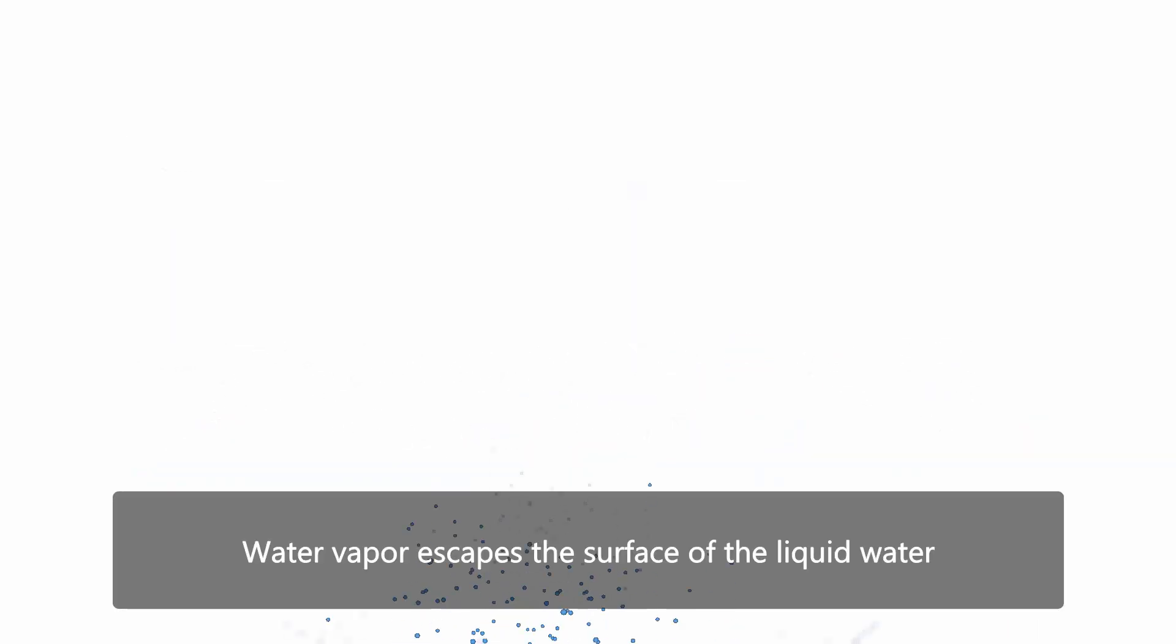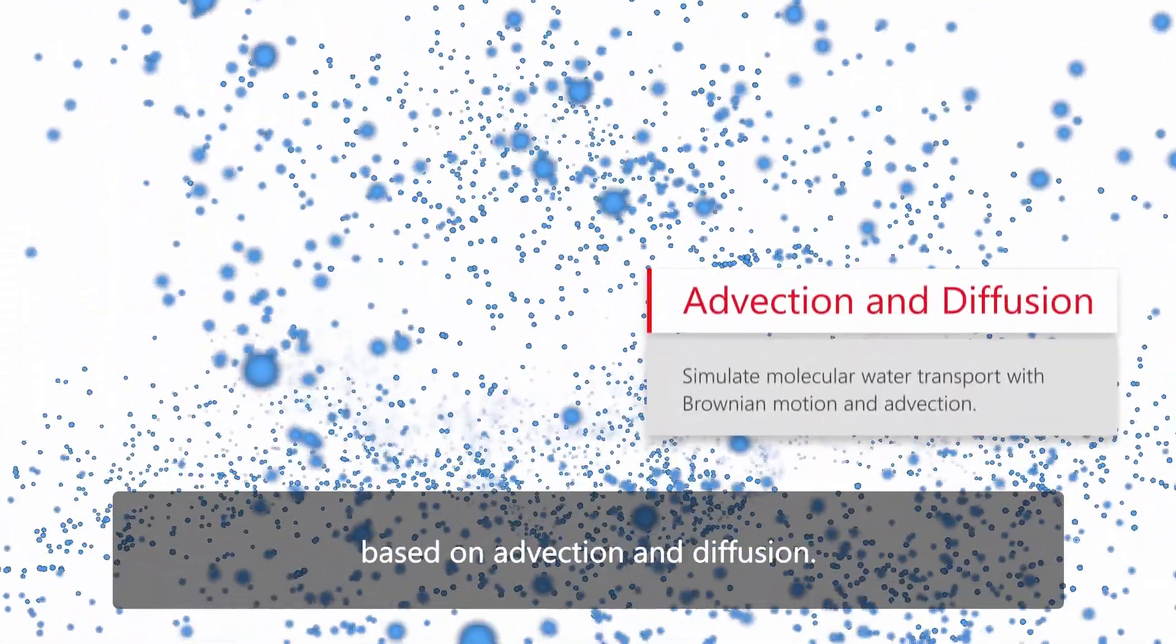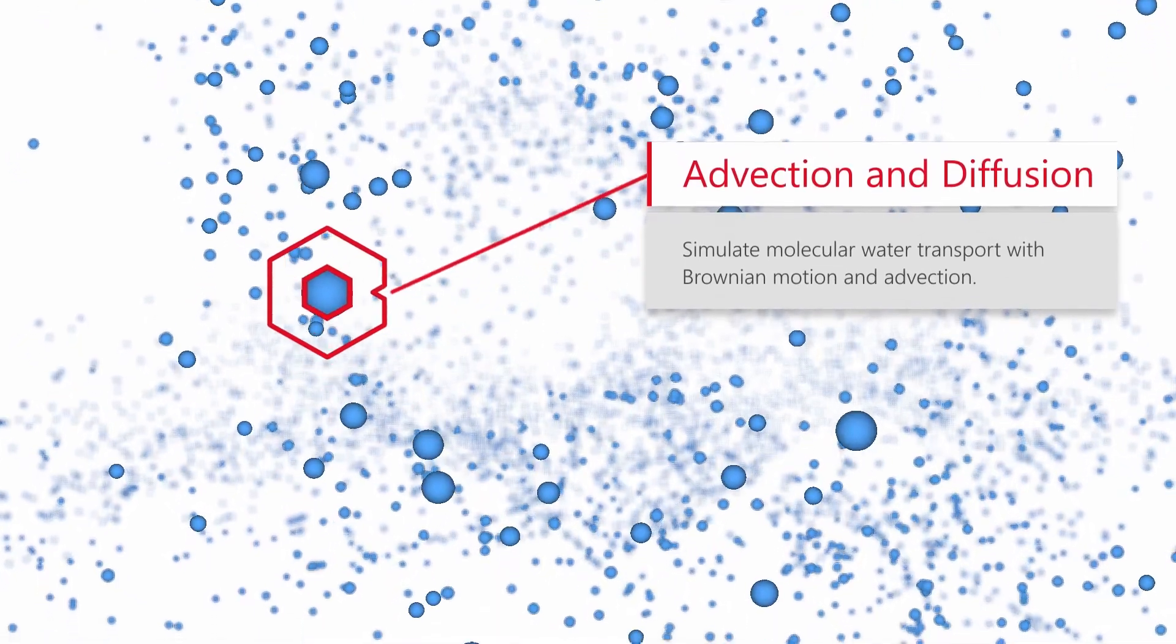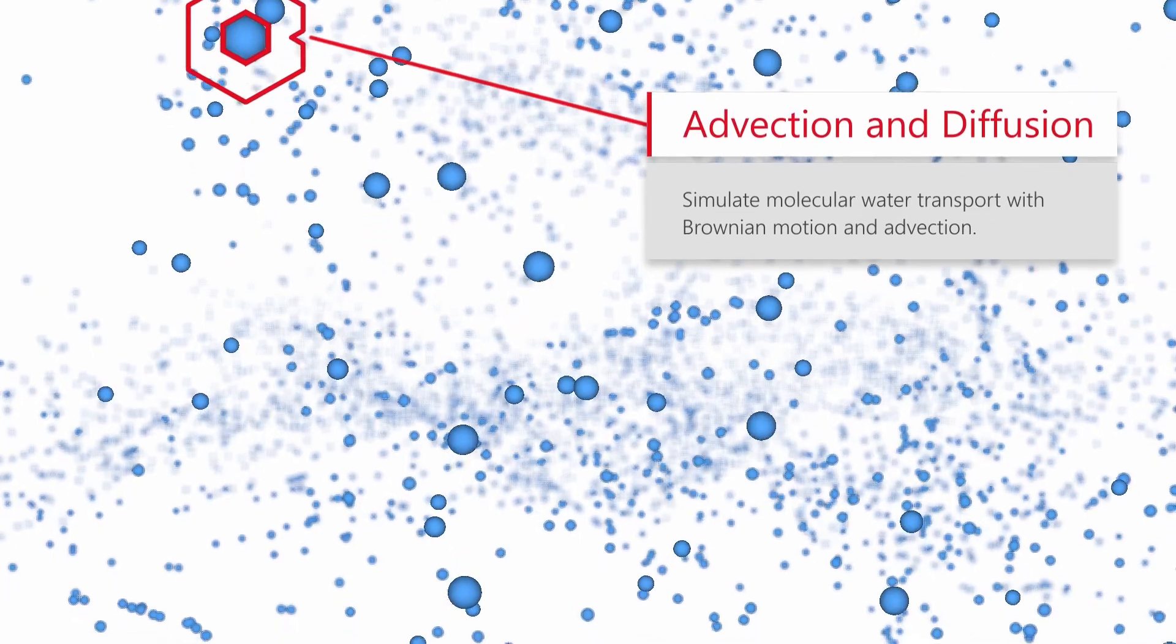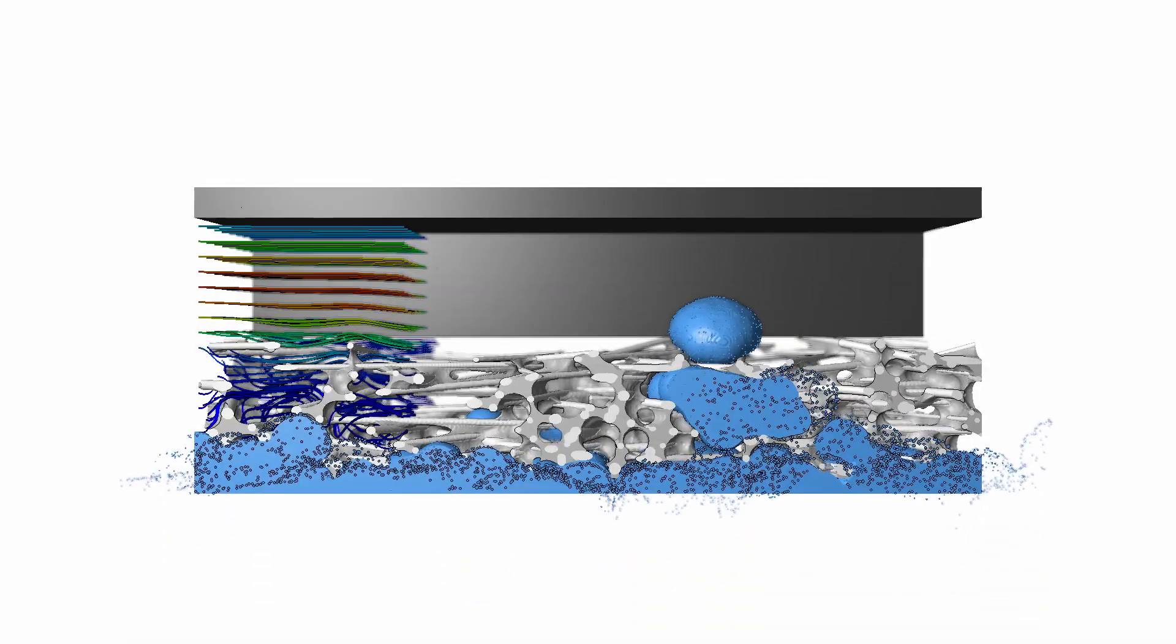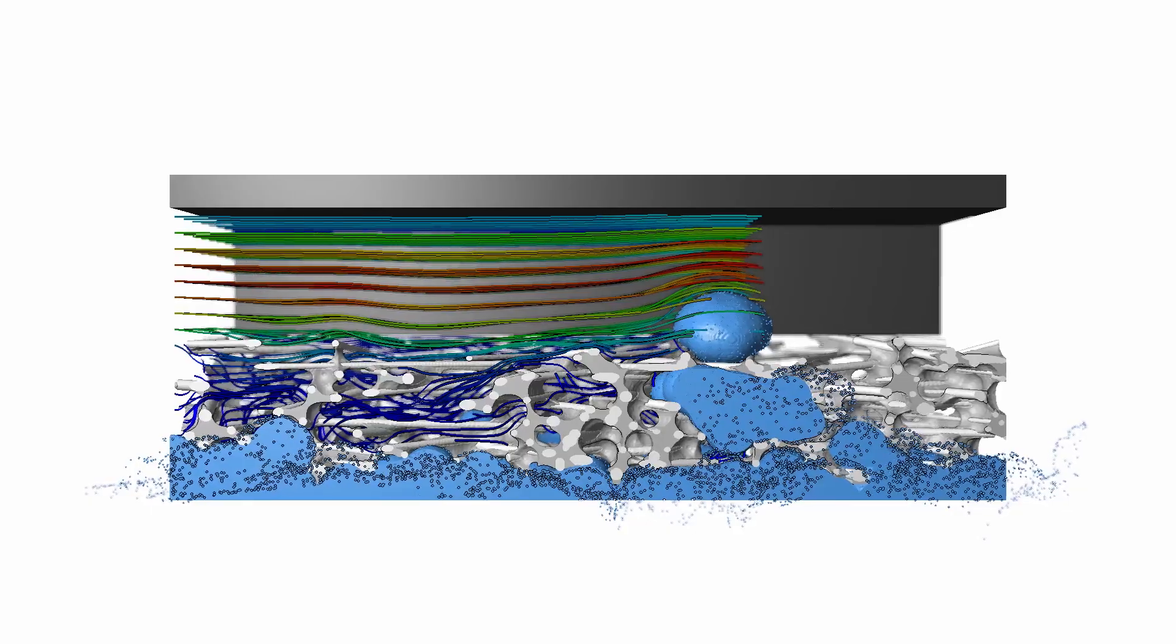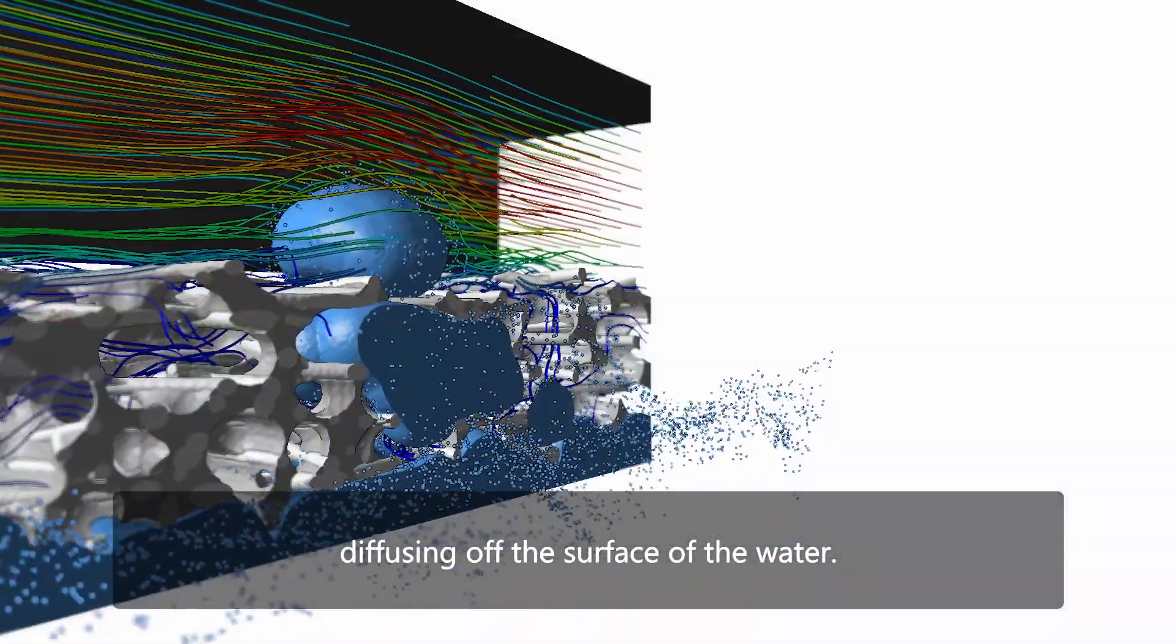Water vapor escapes the surface of the liquid water and gets carried away by the gas flow based on advection and diffusion. The flow sees water vapor diffusing off the surface of the water.